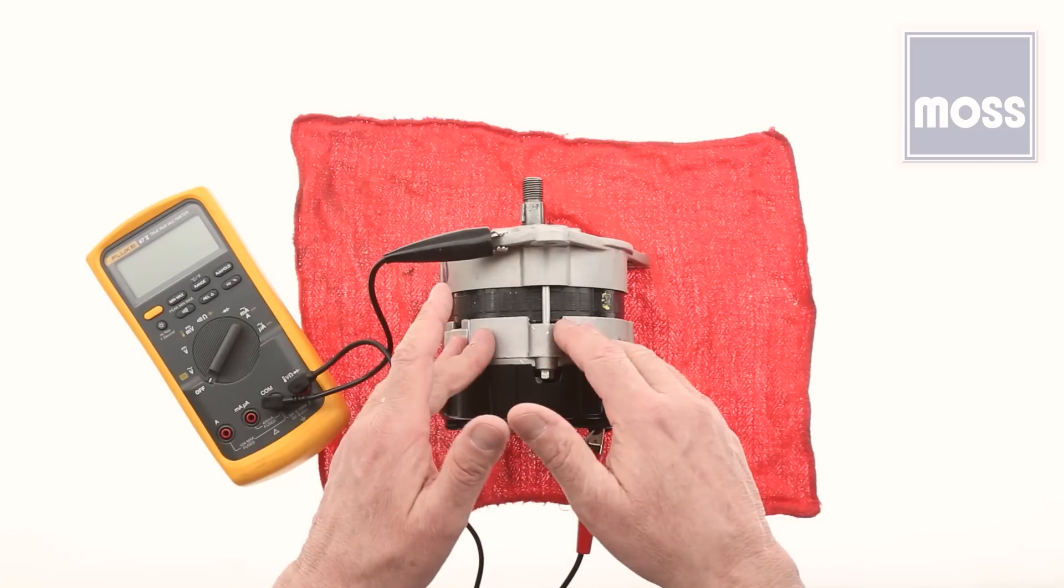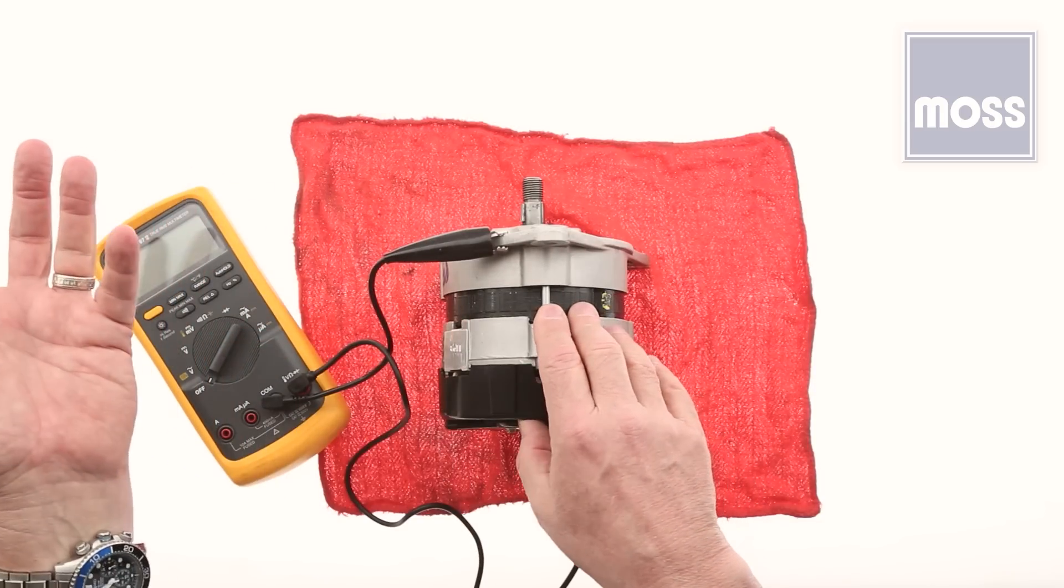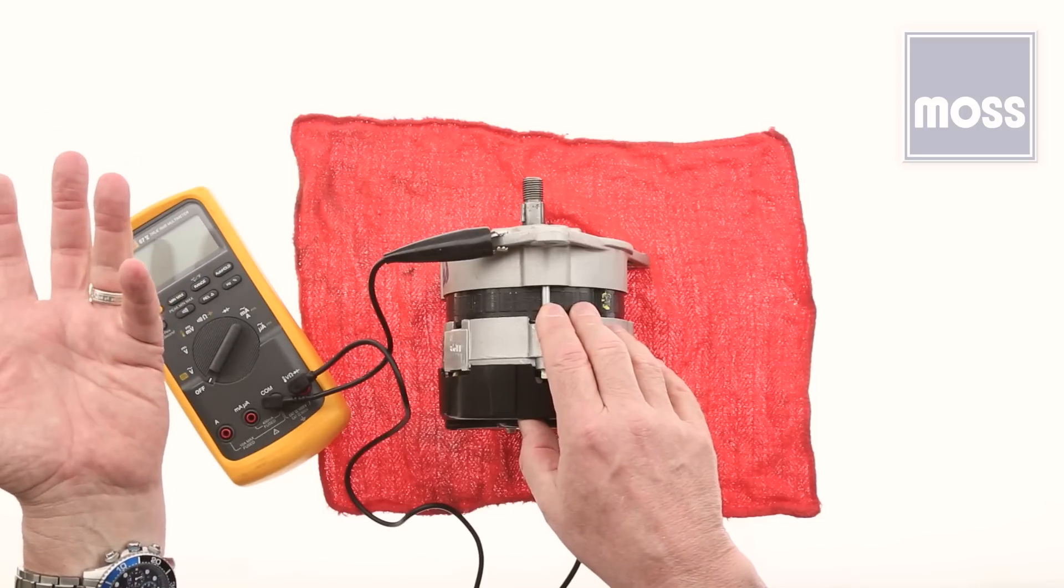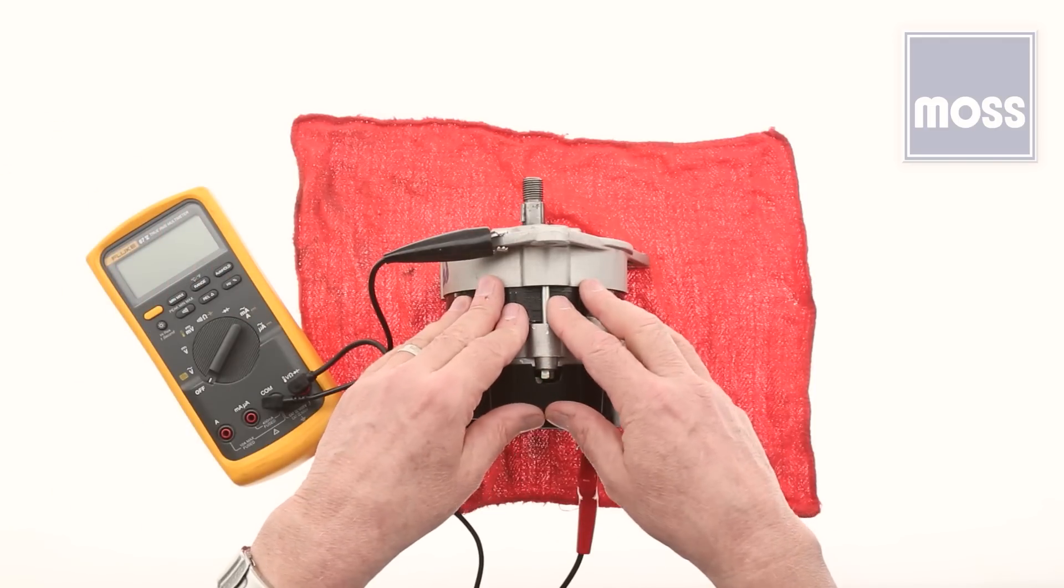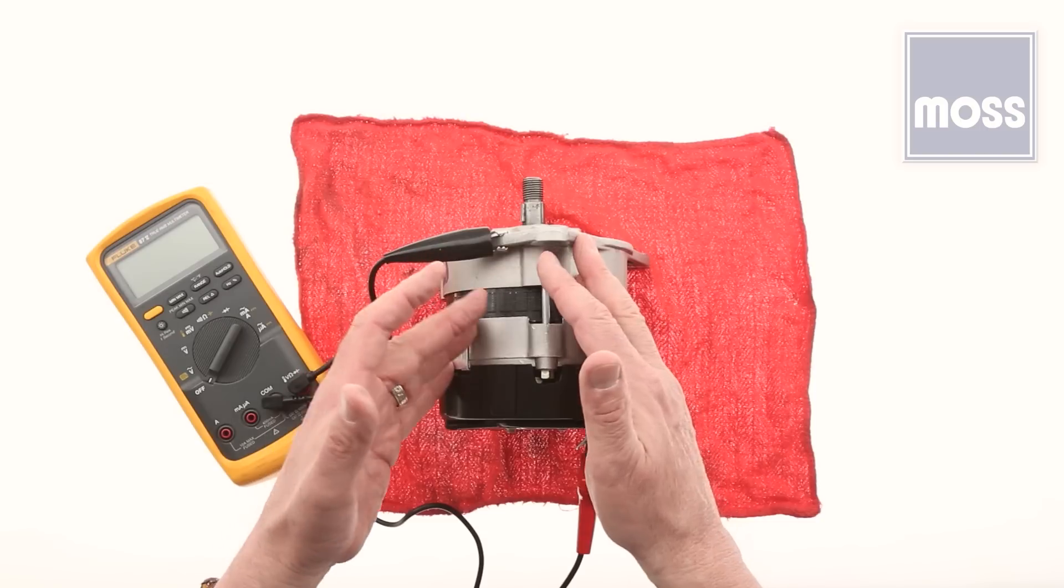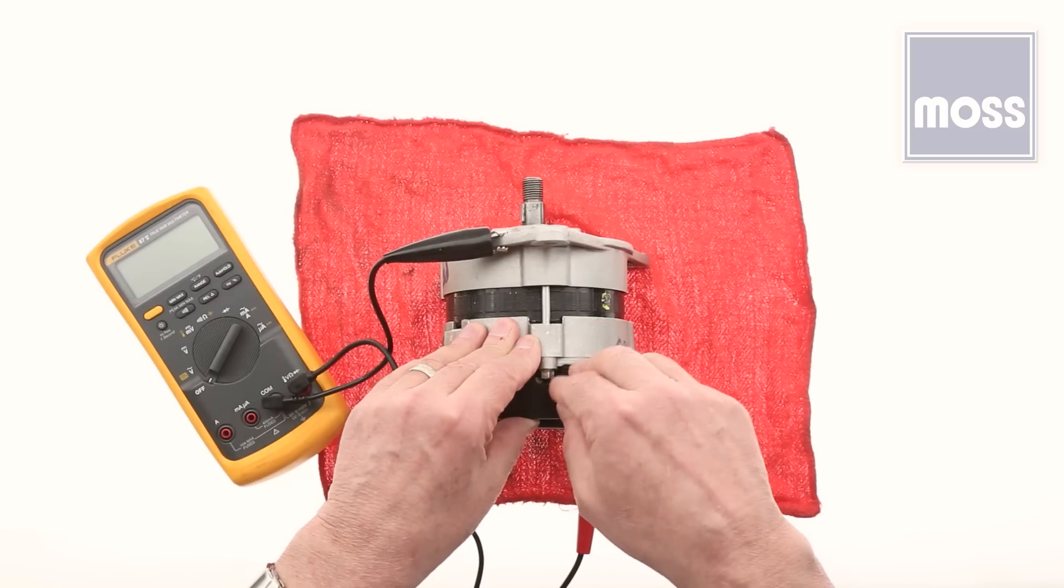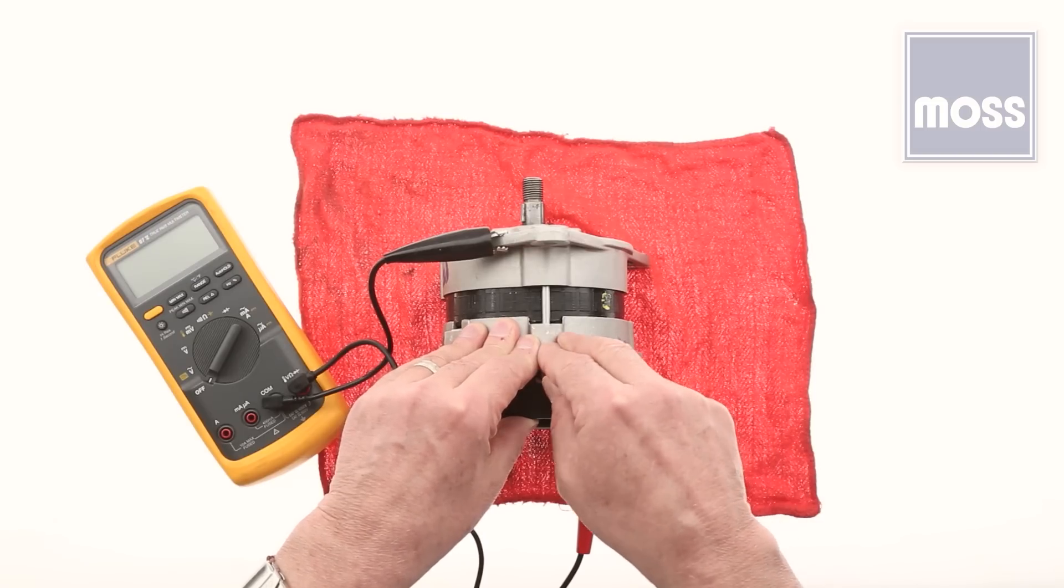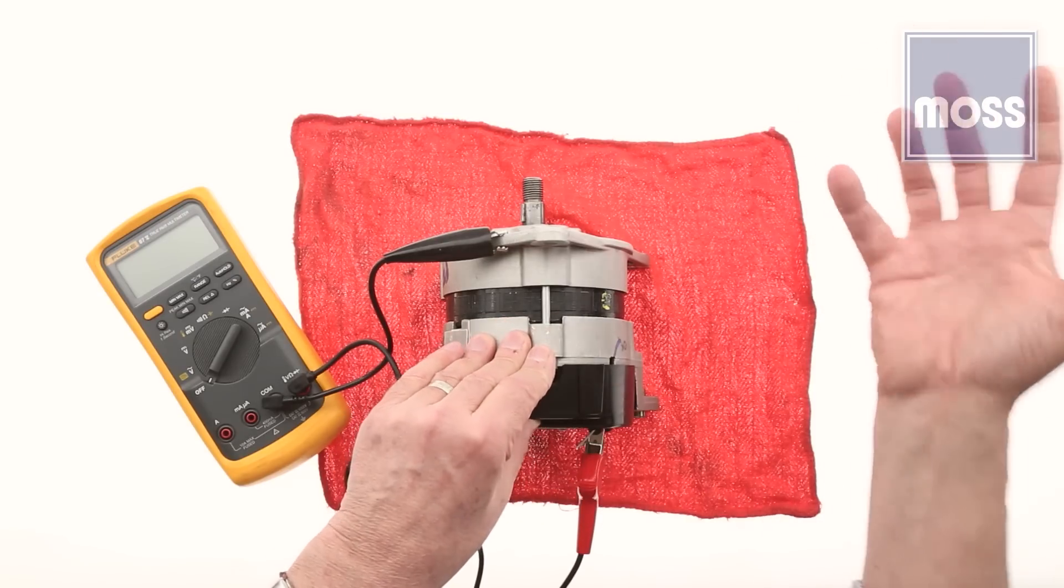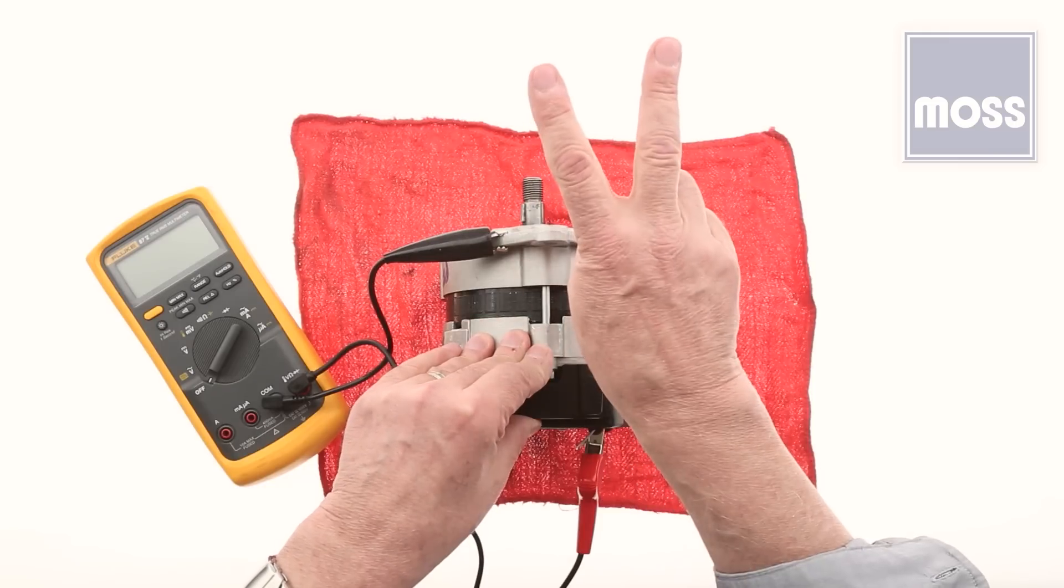The original alternator in our classic British cars was probably around 35 to 45 amps. An alternator from a newer car can produce 60, 70, or over 100 amps. The alternator belonging to this technician's wife is rated at 200 amps. Putting that excess power into your classic car leads to two problems.